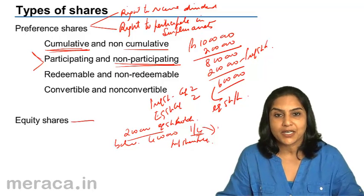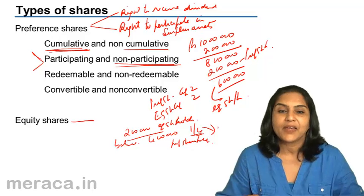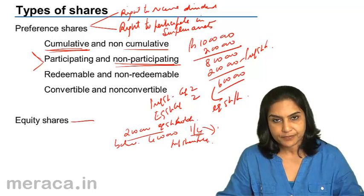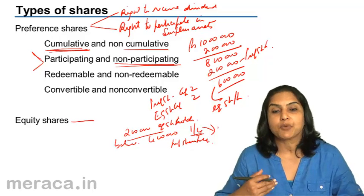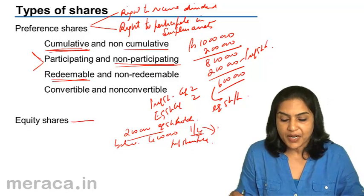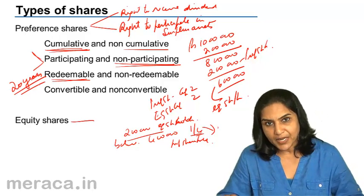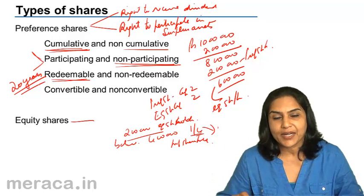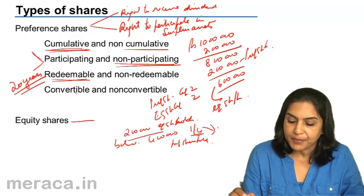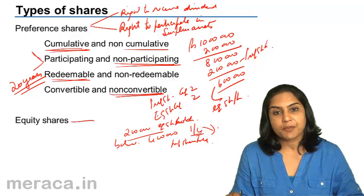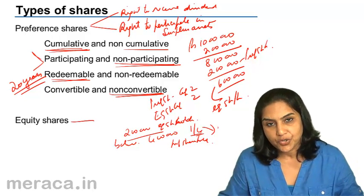Normally, preference shares are non-participating. If they are allowed to participate in extra profits beyond their dividend, or in extra assets at the time of winding up beyond their capital, then they are called participating preference shares. Another type is redeemable and non-redeemable. Redeemable means they would be repaid. In India, all preference shares are redeemable and must be redeemed by law within a period of 20 years. Non-redeemable would mean preference shares are not repaid back, and only on liquidation would the amount be paid. Another kind is convertible or non-convertible. Non-convertible means preference shares do not get converted into equity shares, while convertible means they could get converted to equity shares.